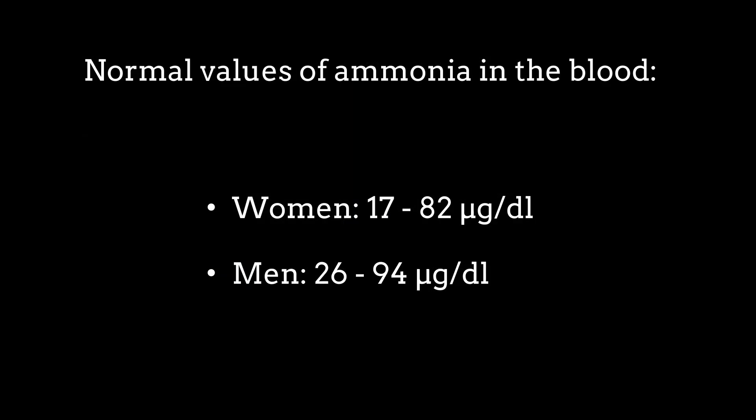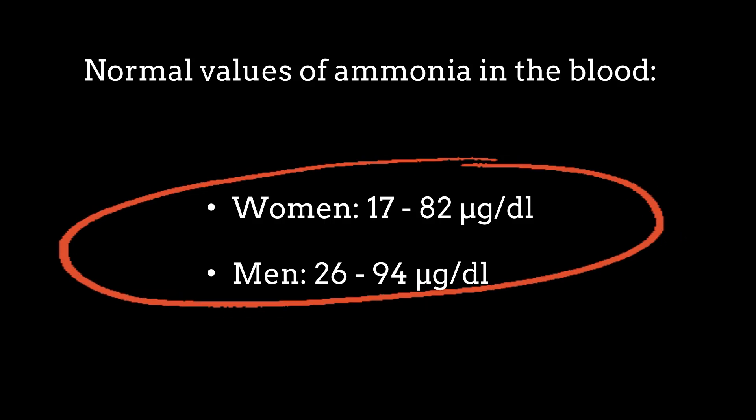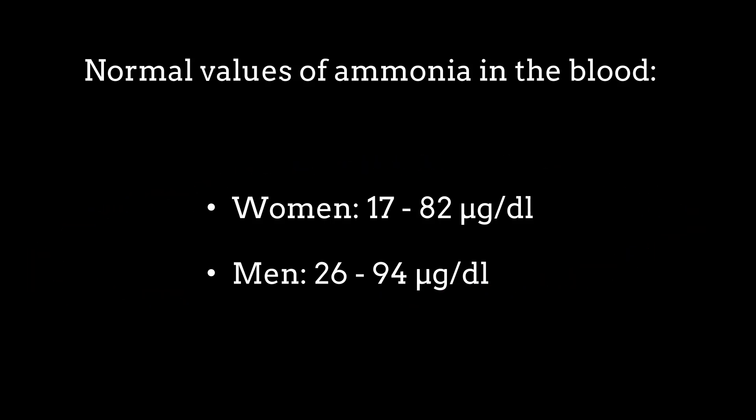Ammonia is also always present in the blood of a healthy human body, although the concentration is much lower. If the ammonia content of the urine is increased, the reason may be liver damage, but it may also be an indication of kidney damage or a bacterial urinary tract infection.